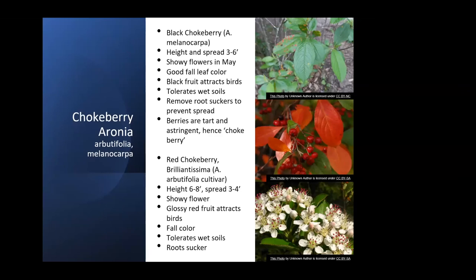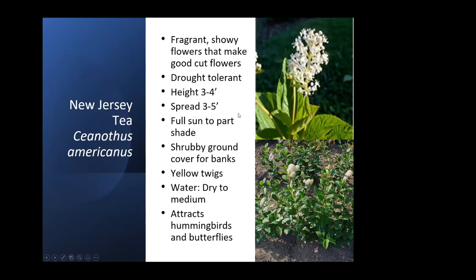New Jersey tea has a fragrant, pretty showy flower that makes a good cut flower. It is drought tolerant, which can be useful given Kentucky's occasional extended droughts. It gets a height of three to four feet and a spread of three to five feet, takes full sun to part shade, can be a great cover for banks, and the yellow twigs are also fairly attractive. It will attract hummingbirds and butterflies.